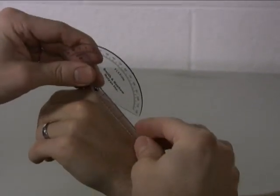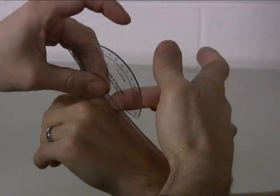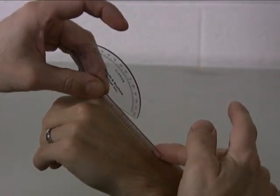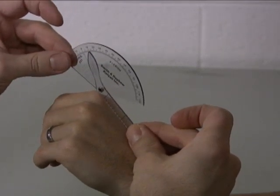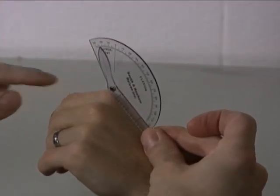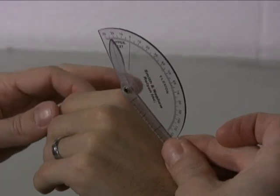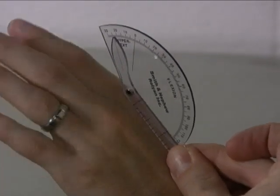The stationary arm is placed on its edge over the length of the metacarpal of the finger that's being measured. The moving arm is placed then over the proximal phalanx. So go ahead and straighten your fingers out as far as they'll go.